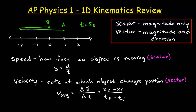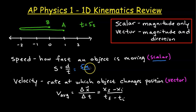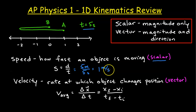Now let's take a look at speed and velocity. Speed is a scalar — it is how fast an object is moving. It only has an amount; there's no direction. To calculate the speed of an object, it's the distance divided by the time. If the speed is changing, this tells you the average speed. The distance from A to B is five meters, and the time is five seconds, so the speed is simply one meter per second.